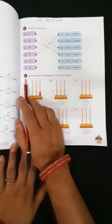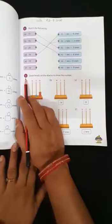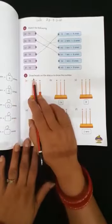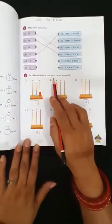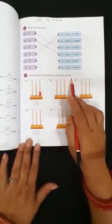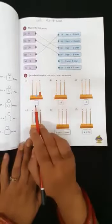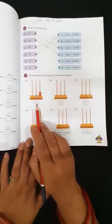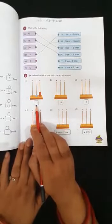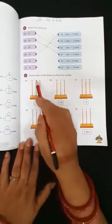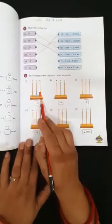Now come to the next. Number 5. Draw beads on the abacus to show the number. A. What is number here? 13. In 13, 1 ten and 3 ones.